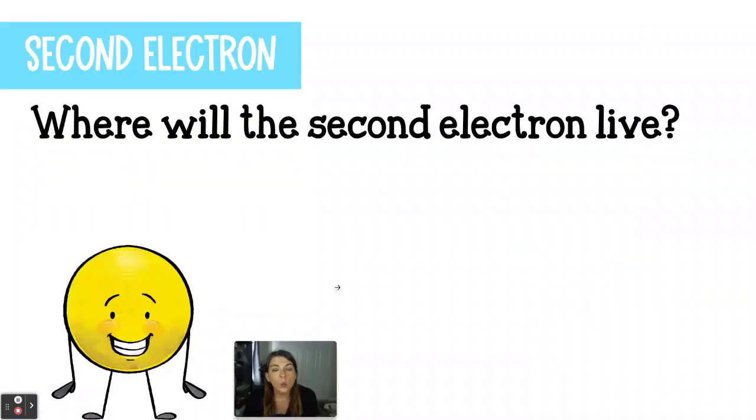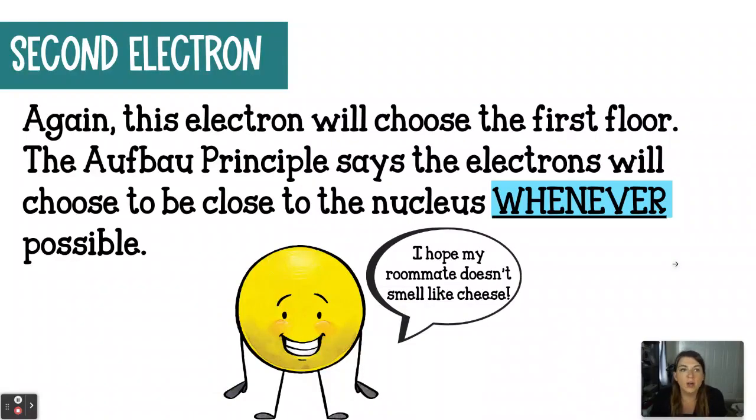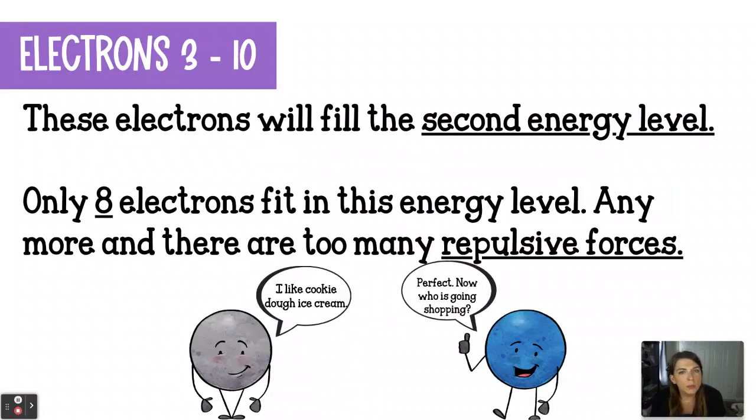It is because the nucleus is overall positive, made of positive protons and neutral neutrons, and electrons are negative. So the positive-negative combination means the electrons want to get as close to the nucleus as possible. Now if we have a second electron, where would the second electron want to live? The second electron will also choose to live on the first floor. Only two electrons fit in that first energy level. Too many electrons and it breaks open because they repel each other.